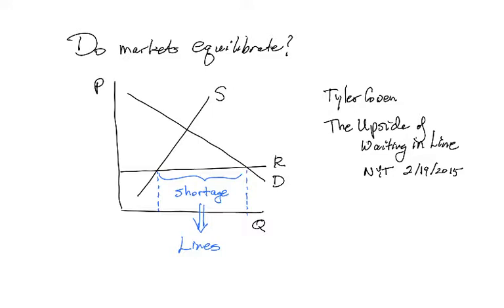But government decides to put in a price ceiling at R. That is, the price cannot exceed R because this is fair and we want to hold these prices down.